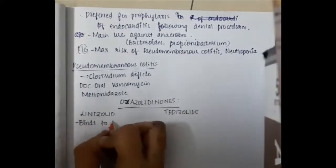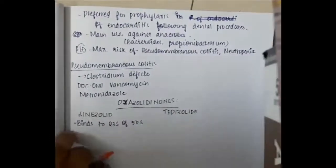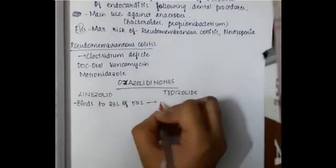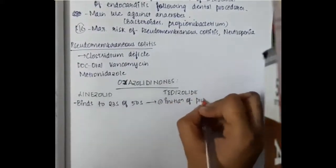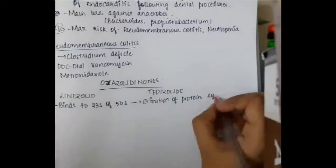Linezolid and tedizolid bind to 23S of 50S ribosome and inhibit the initiation of protein synthesis.